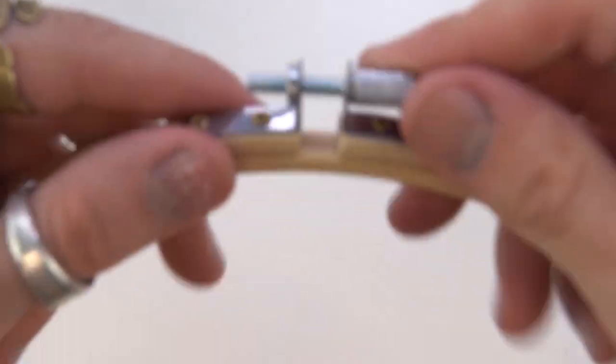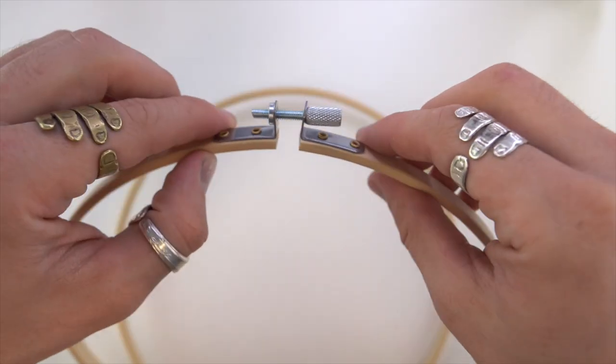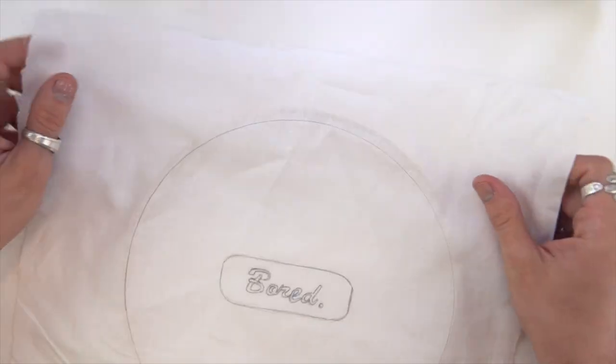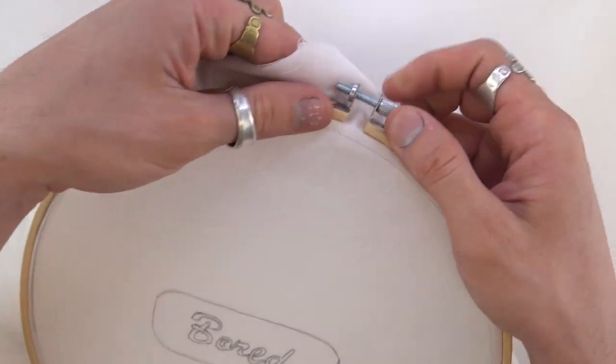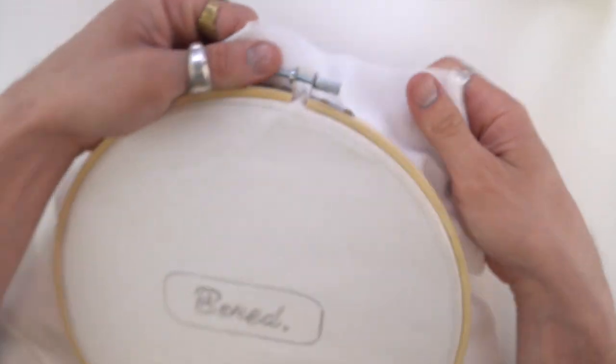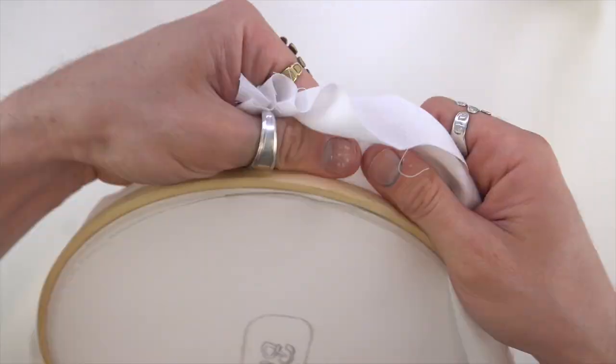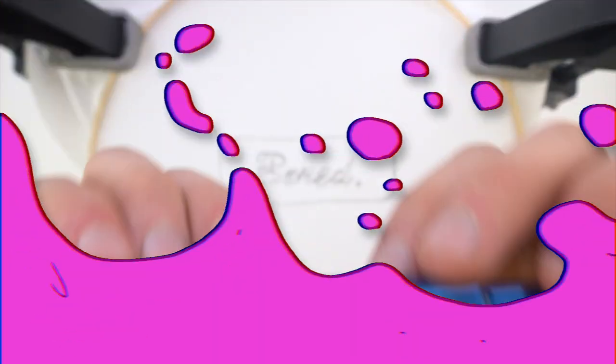So with that all traced out, you're going to loosen up your hoop, let the inner hoop fall on the table, put the fabric on top, put the outer hoop on top, tighten it a little bit, just enough so that you can tighten up the fabric all the way around, and good to go.